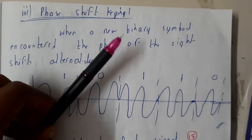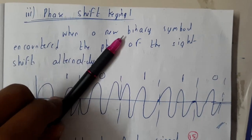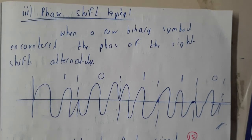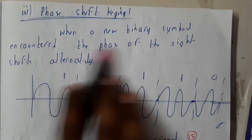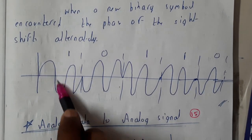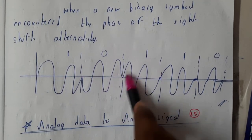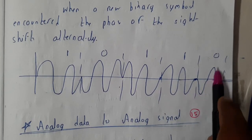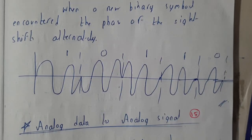With respect to phase — Phase Shift Keying (PSK): if the signal is at one and stays at one, it remains constant. But if it changes from one to zero, there is a phase change — like 90 degrees or 180 degrees. When a new binary symbol is encountered, the phase will change. If it is one the signal goes up; if it is zero it comes from below. If it is one it continues up; if it is zero it comes down.